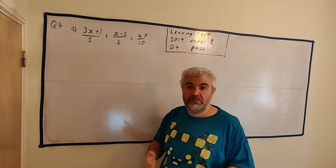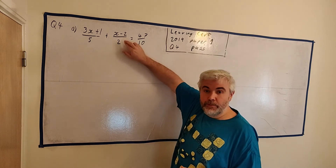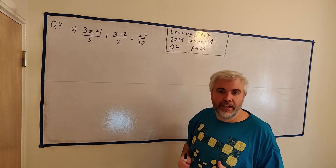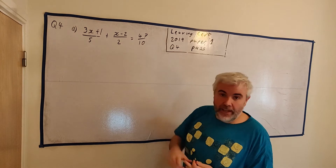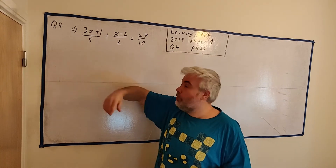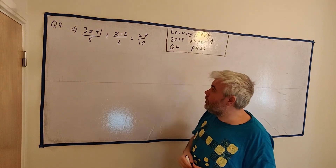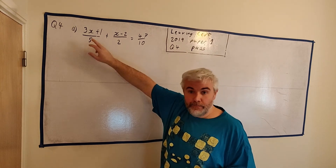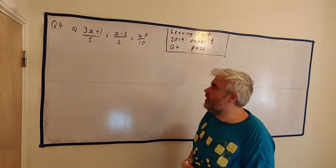Multiply top and bottom by any number you want — that's fair. So really you just need to think of a number you can get 5 to, 2 to, and 10 to. The number I'm thinking of is 10 — but 20, 30, or 40 would also work. I'll go with 10. Let's turn the 5 into a 10, turn the 2 into a 10, and leave the 10 alone — it's already a 10.